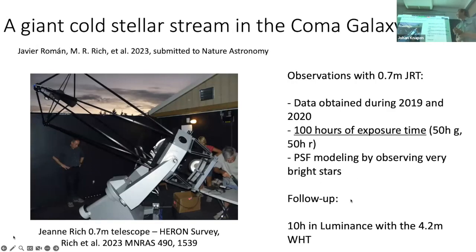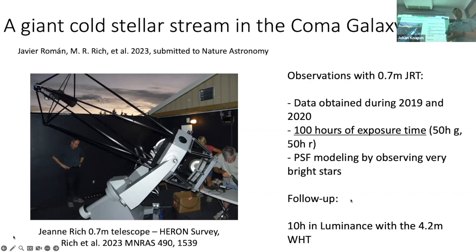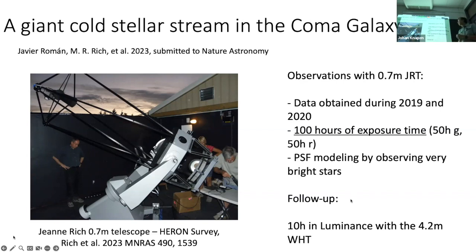Here's the first example: the giant cold stream. The main observations were done with a 70 centimeter telescope called the JRT, the Doujón-Rich telescope, which is a private telescope operated by Michael Rich in California. The advantage of having a private telescope, even though it's small, is that you can spend a lot of time observing objects. The data for this project were obtained during 2019 and 2020, with a total exposure time of around 100 hours — 50 hours per band in two optical bands.